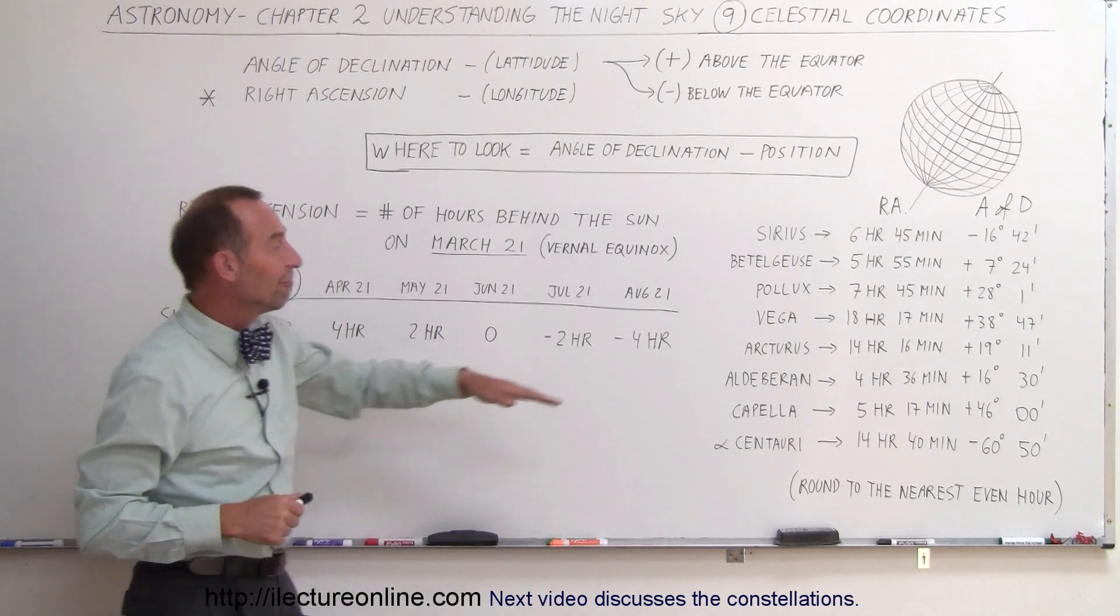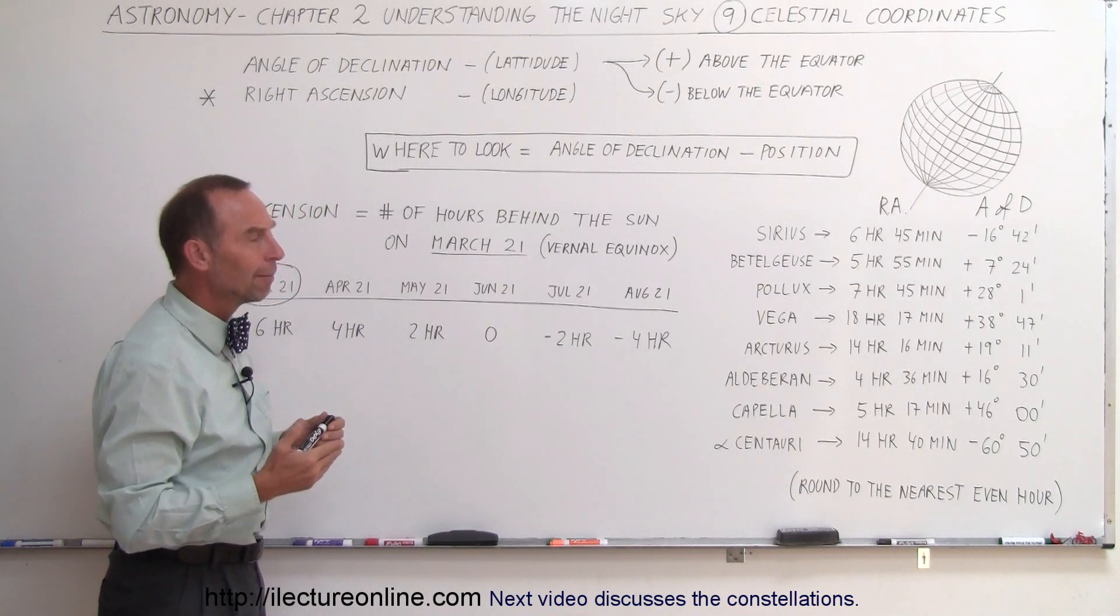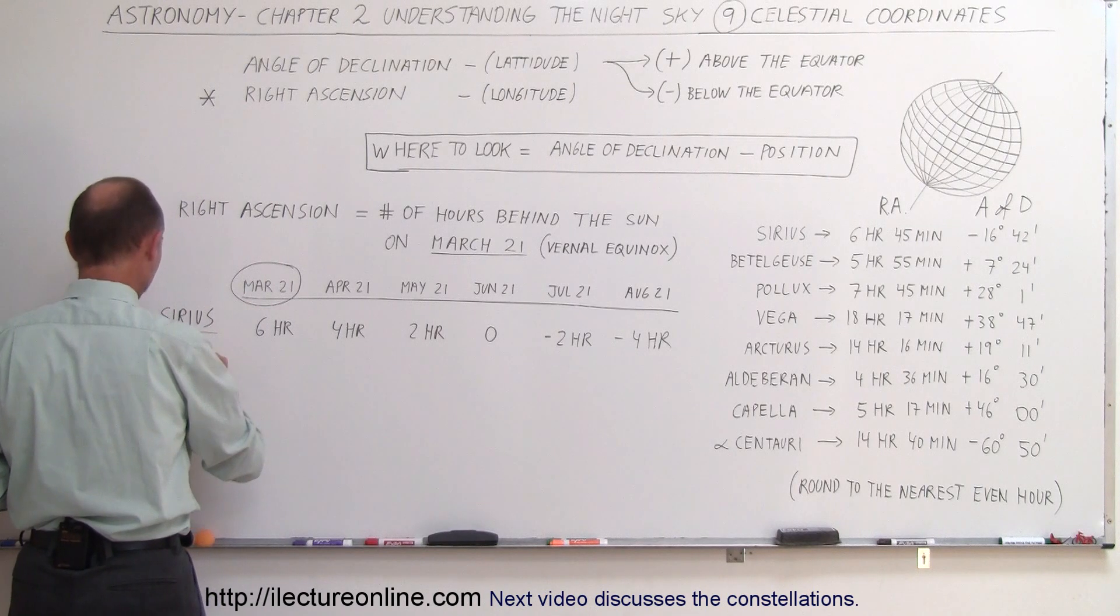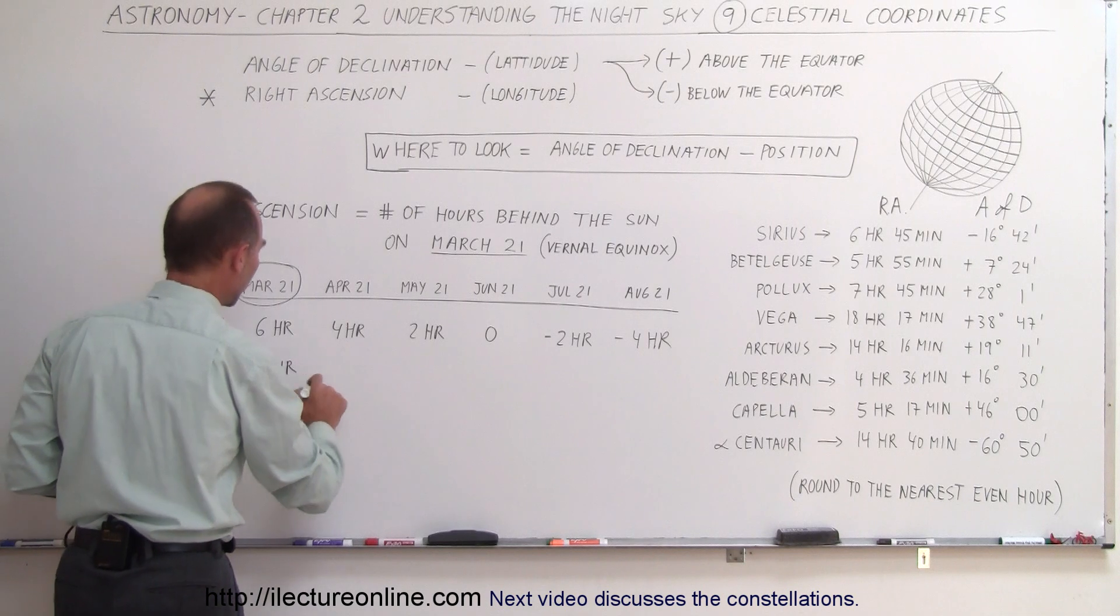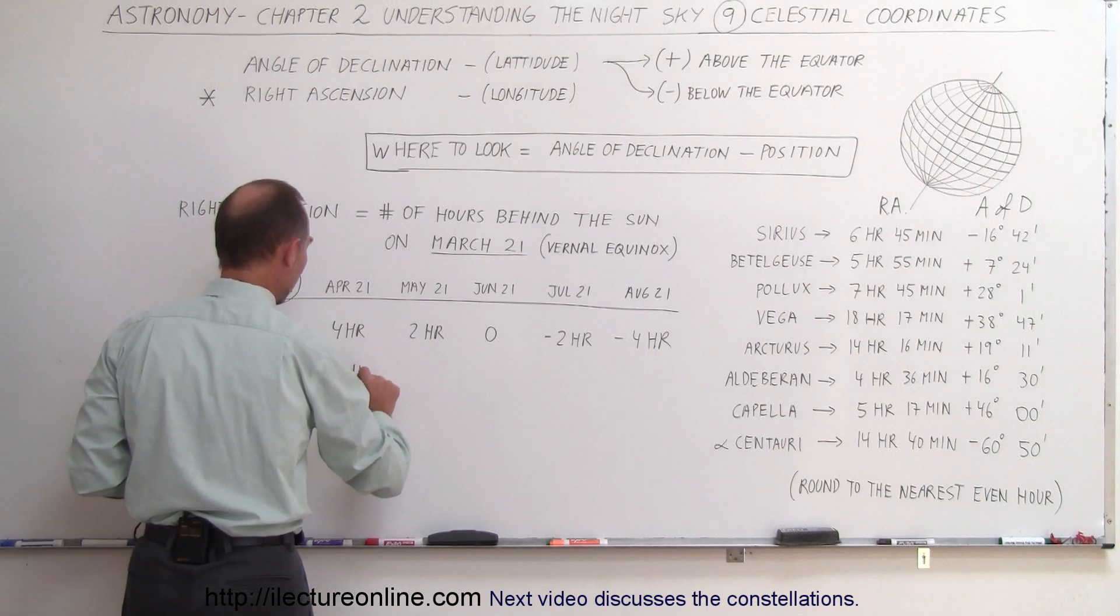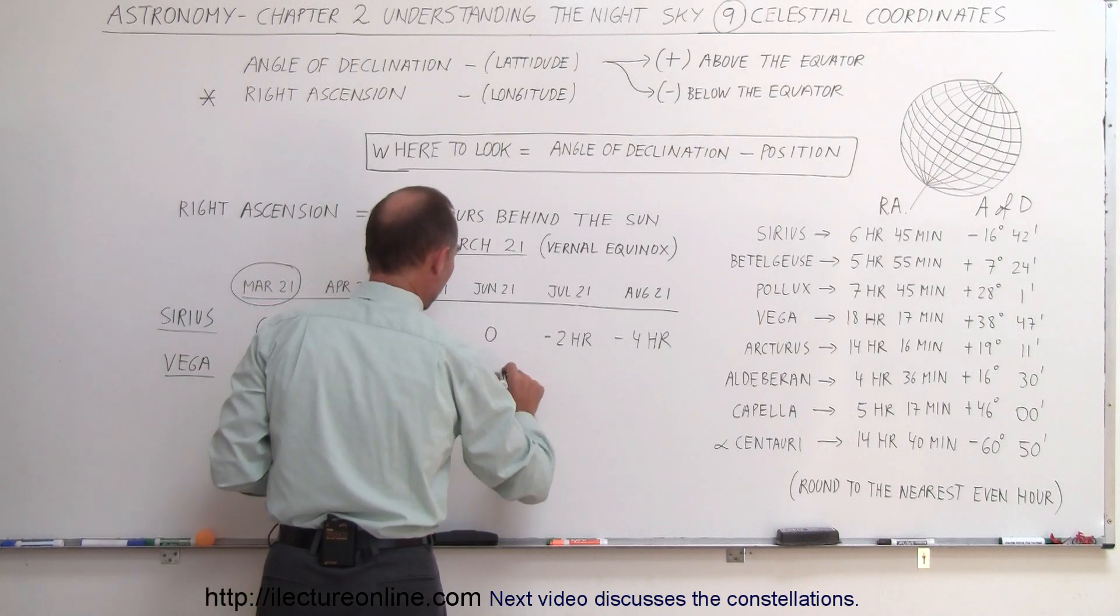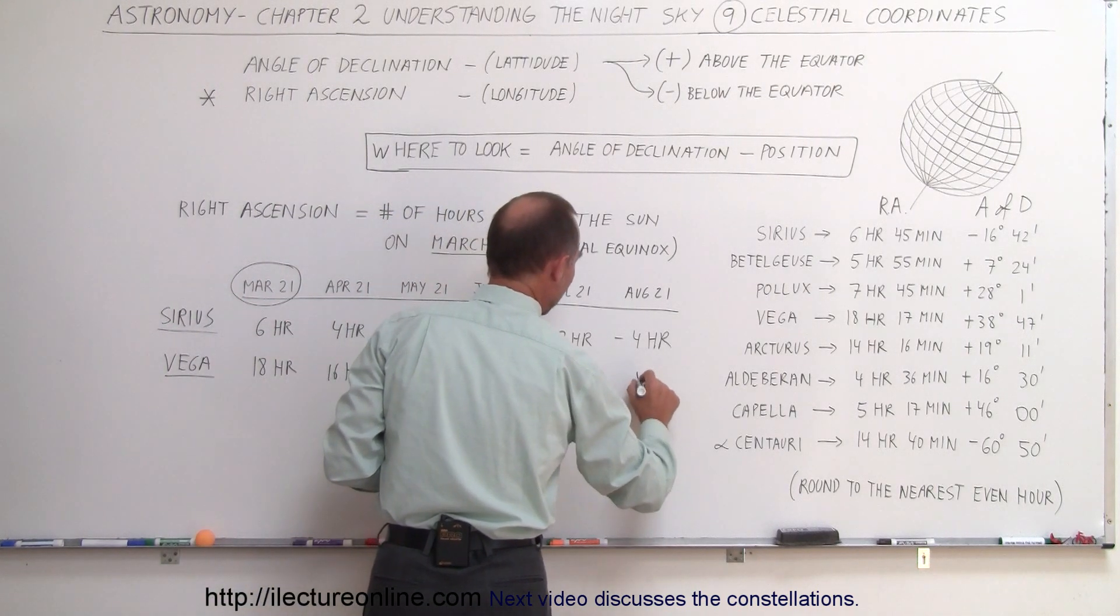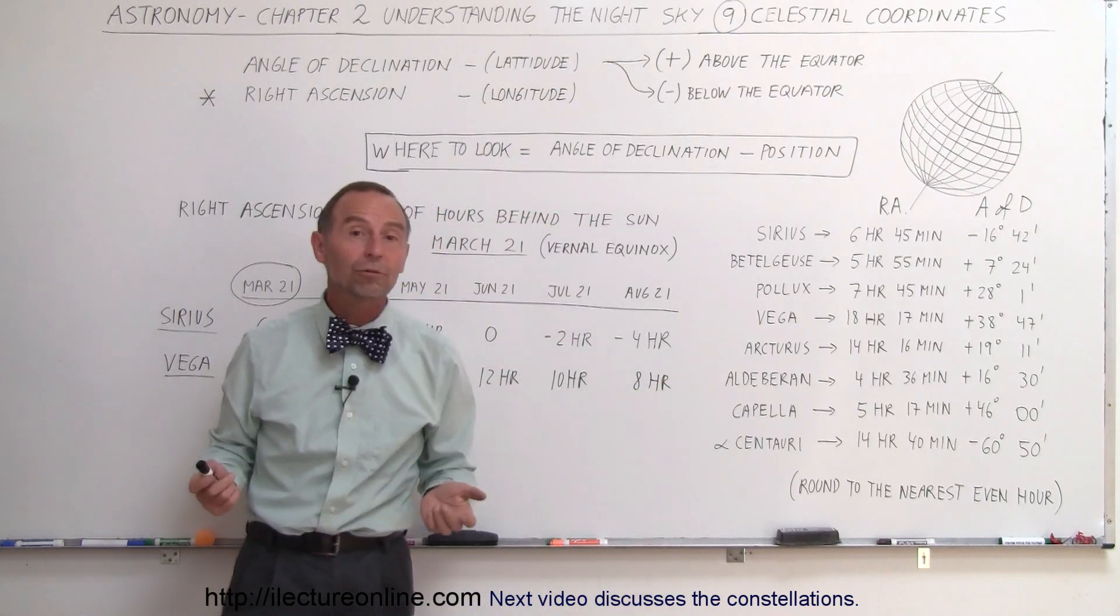Alright, let's say we want to look at Vega. Vega is 18 hours behind the Sun. That would be in March, so let's put down Vega. So where would it be today? So 18 hours in March, 16 hours in April, 14 hours in May, 12 hours in June, 10 hours in July, and 8 hours in August.